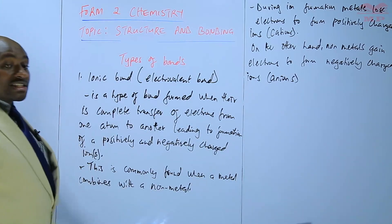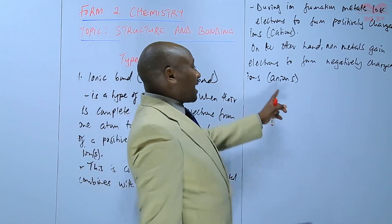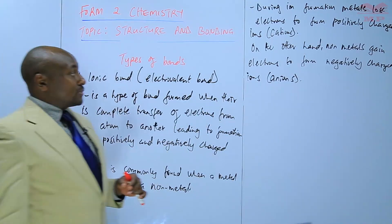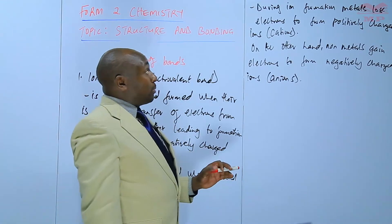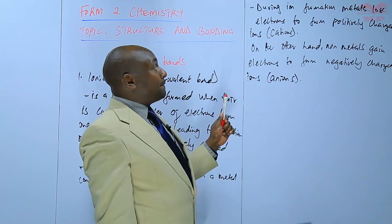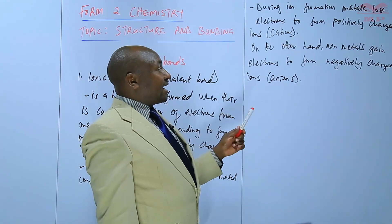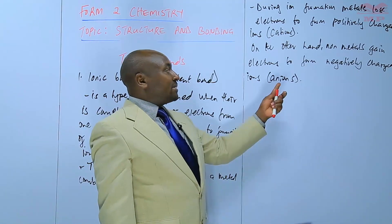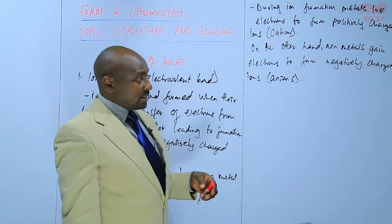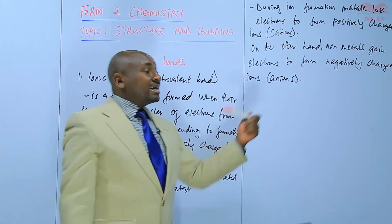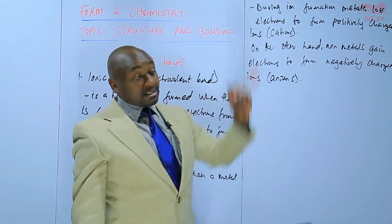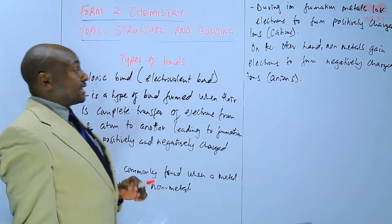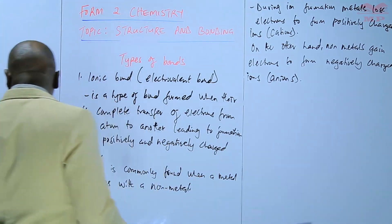So from that, we can distinguish what are cations and what are anions. Cations are the positively charged ions, while anions are the negatively charged ions. The positively charged ions come from metals losing electrons. When non-metals gain electrons, they are basically gaining negative charges, so they become negatively charged. When metals lose electrons — they are losing negative charges — they become positively charged.